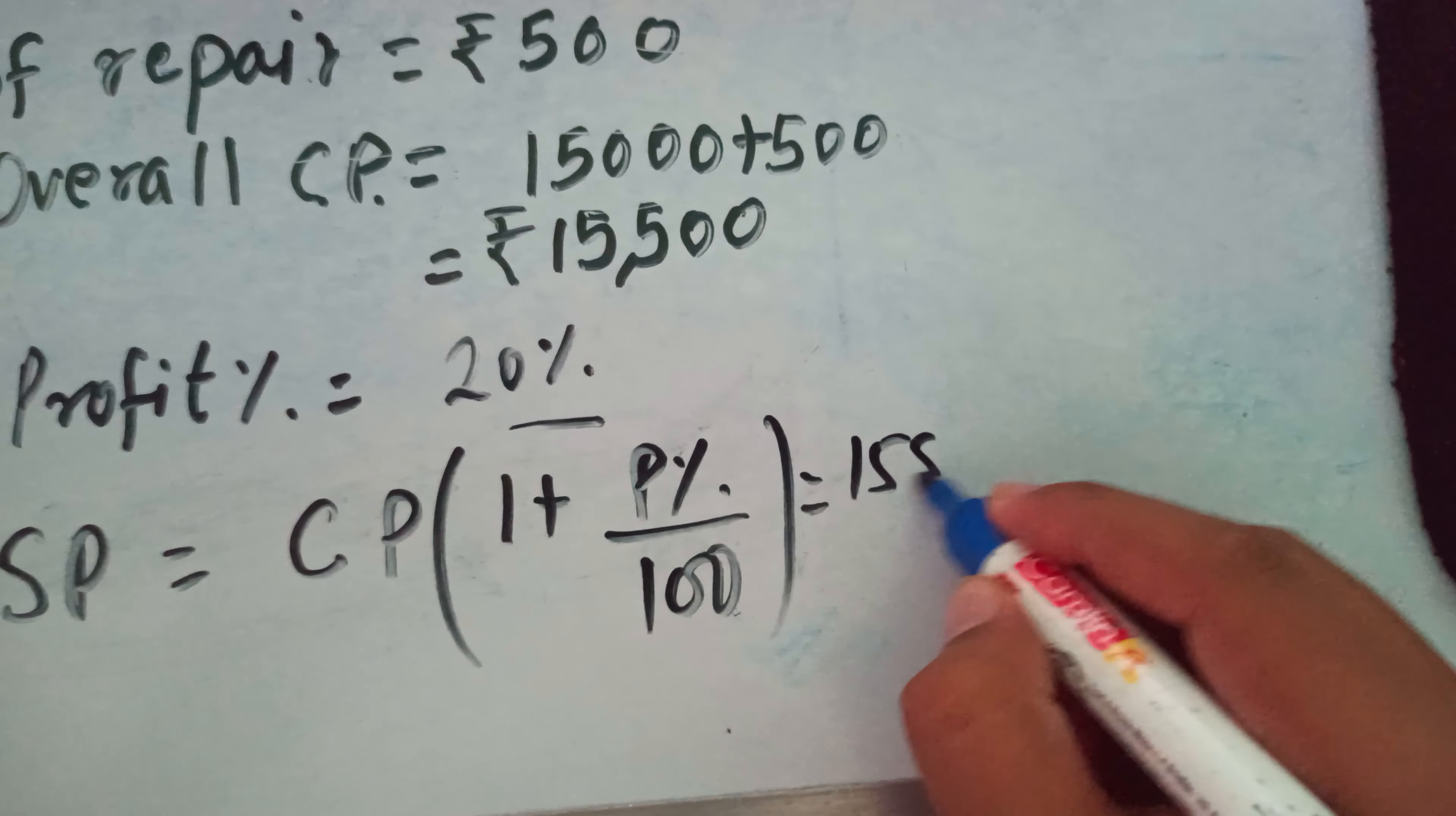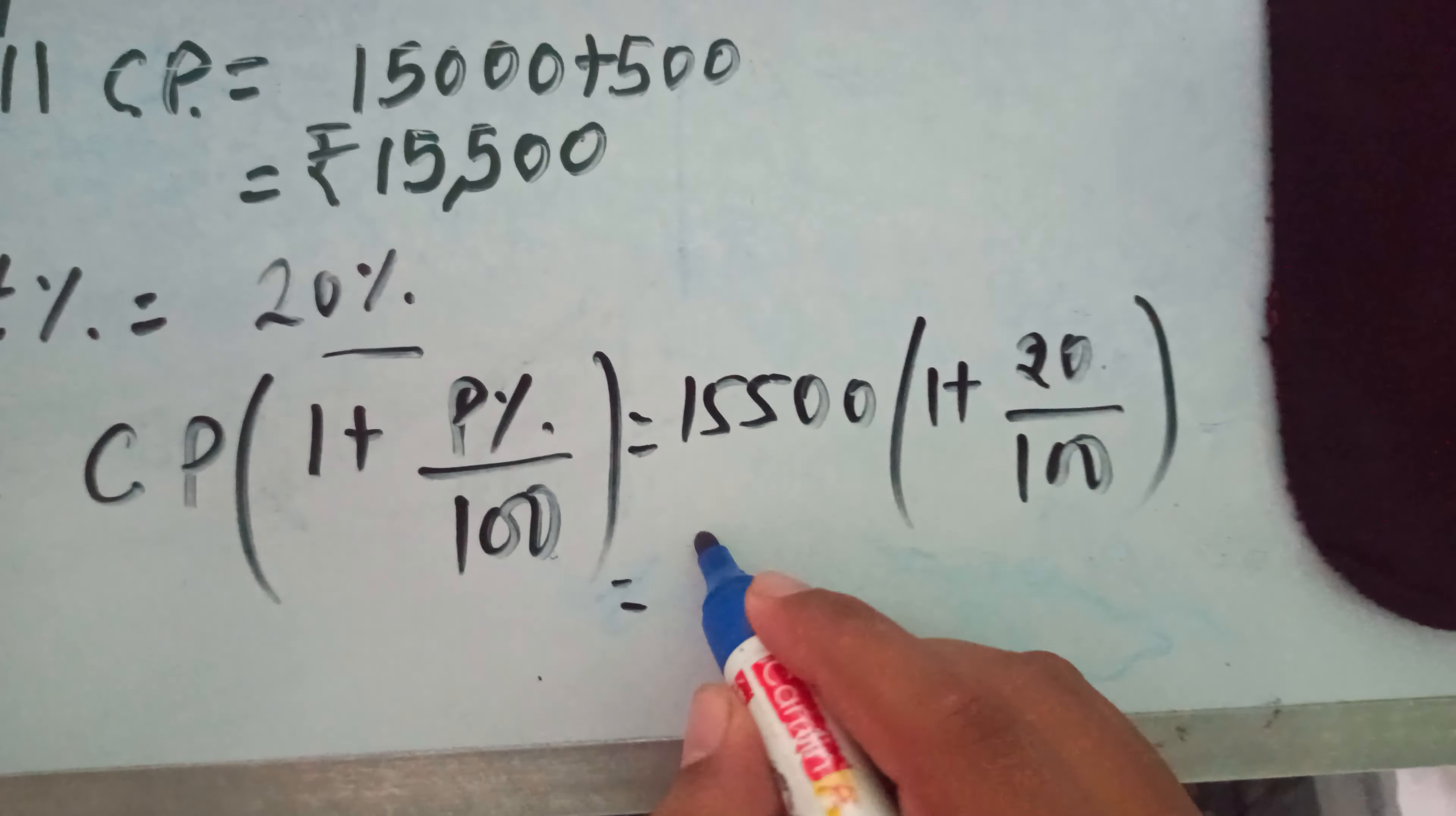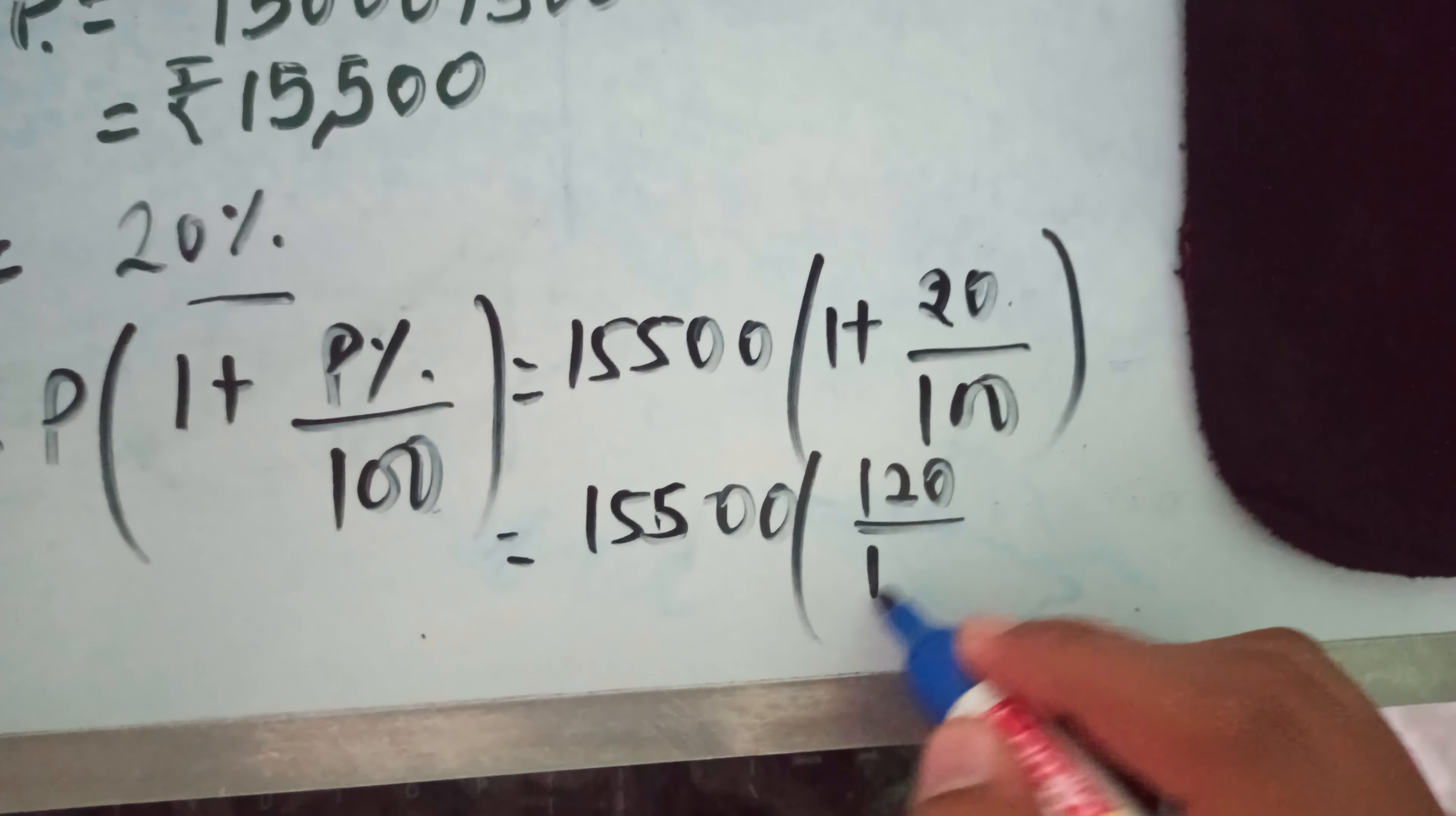So CP is ₹15,500, and in brackets we have 1 plus profit percent which is 20 divided by 100. This becomes 15,500 multiplied by 120/100.